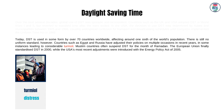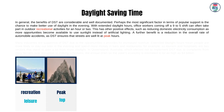Muslim countries often suspend DST for the month of Ramadan. The European Union finally standardized DST in 2000, while the USA's most recent adjustments were introduced with the Energy Policy Act of 2005. In general, the benefits of DST are considerable and well-documented. Perhaps the most significant factor in terms of popular support is the chance to make better use of daylight in the evening. With extended daylight hours, office workers coming off a 9-to-5 shift can often take part in outdoor recreational activities for an hour or two. A further benefit is a reduction in the overall rate of automobile accidents, as DST ensures that streets are well-lit at peak hours.